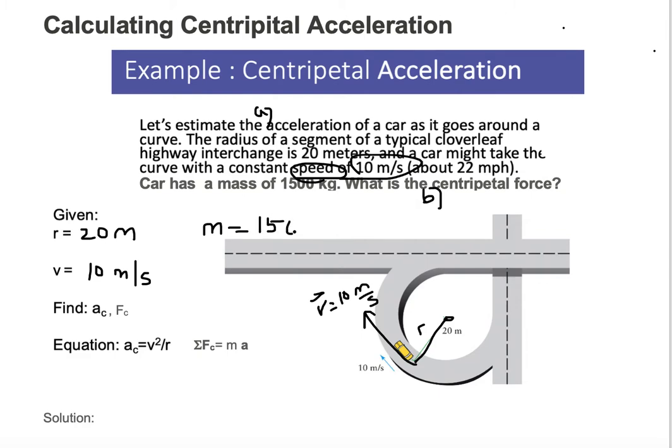Next, we want to identify what it is we're trying to do. So I've already done that in both a and b. We want to find the acceleration and the centripetal force. Since we are looking at things going in circles, things going in circles are centripetal force and centripetal acceleration.